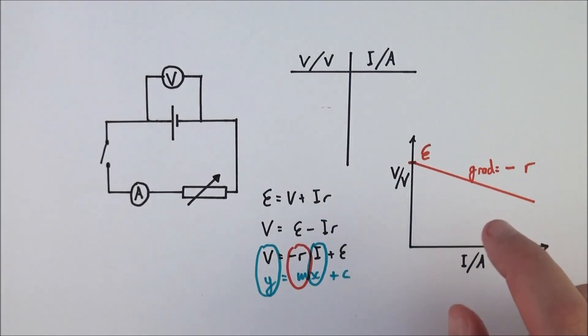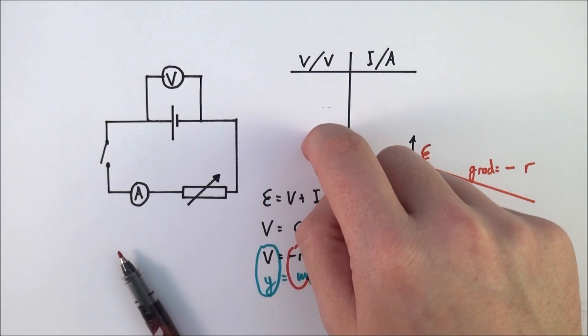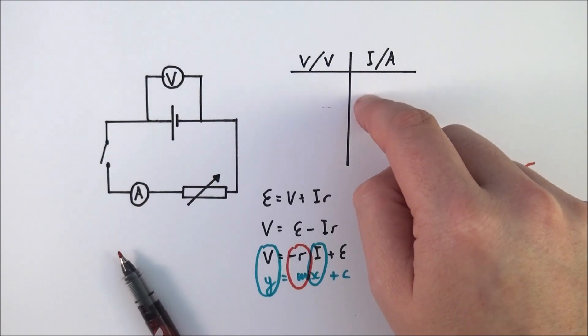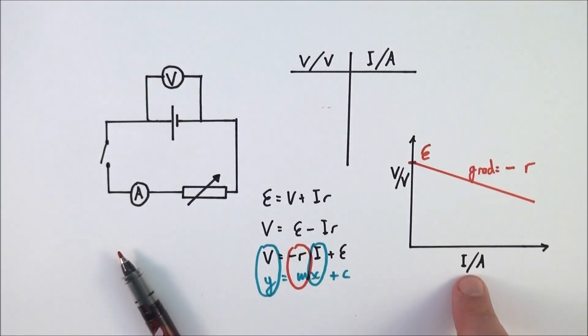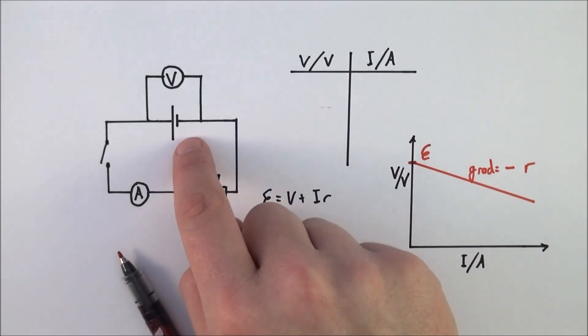So that's pretty much all there is to it. Set up the circuit, take six good readings with a nice range. Remember to take repeats and then find your mean values. Plot V against I on the graph, and then your gradient is going to be equal to the negative value of the internal resistance of the cell.